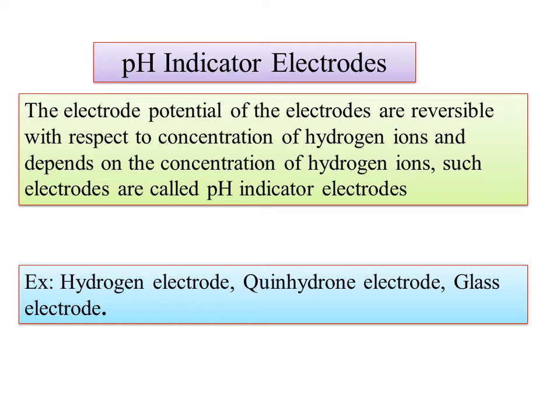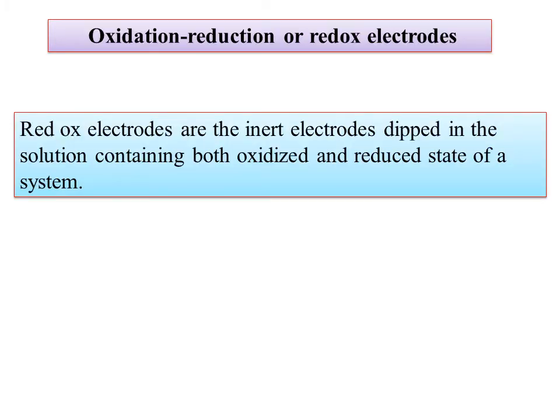The pH indicator electrode will be used based on the EMF of the electrode. It will be reversible with respect to the concentration of hydrogen ions. The solution's EMF depends upon the concentration of the hydrogen ions. Such electrodes can be used as a pH indicator electrode — the EMF of the cell will change due to the presence of hydrogen ions.